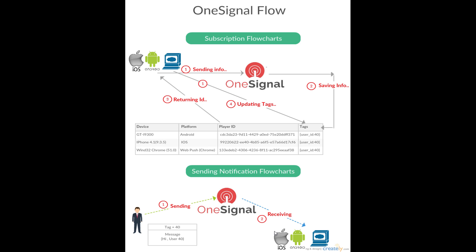After returning the ID and updating tags, the next step is sending the notification to the specific user. We send the notification to the OneSignal API with two parameters: a tag (for example, user ID equal to 40) and the message content. OneSignal then delivers that message back to the browser, Android, iOS, or whatever platform. That covers both flowcharts for how OneSignal works. In our example we'll work with the browser and PHP platform.